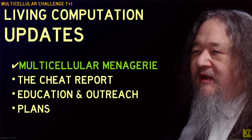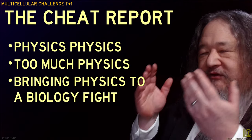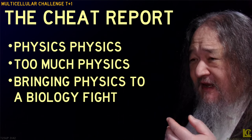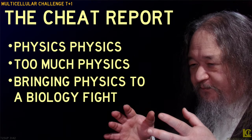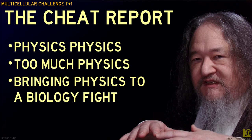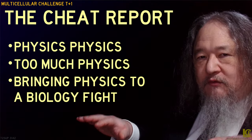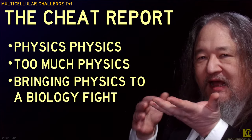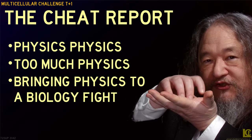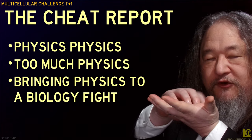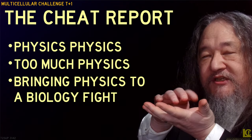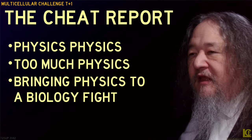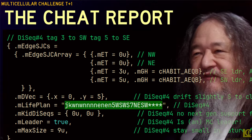I have to talk about the cheat report, and it really comes down to one issue: physics. Bringing physics to a biology fight. The idea is that stuff that's physics cannot be changed without rebuilding an entirely new universe, whereas stuff that's biology is much more soft — it's just arranged the bits in a certain pattern. You could change the bits, so biology is like programmable, whereas physics is like firmware, like hardware. And so there's too much physics going on.